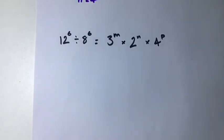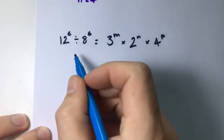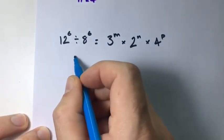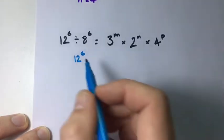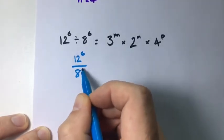Alright, in this example, we have 12 to the power of 6 divided by 8 to the power of 6 equals 3 to the power of m times 2 to the power of n times 4 to the power of p. We know this is the same thing as 12 to the power of 6 over 8 to the power of 6.